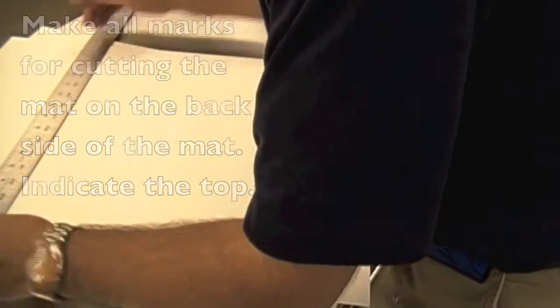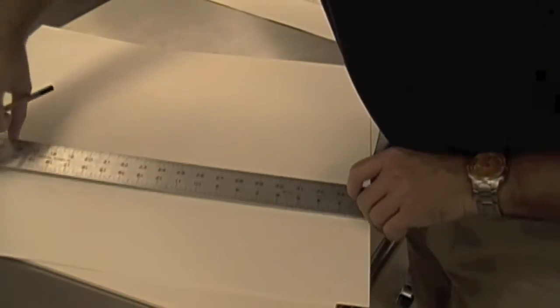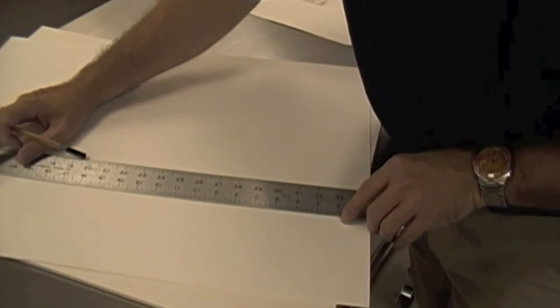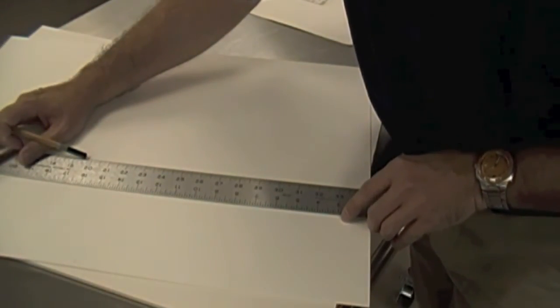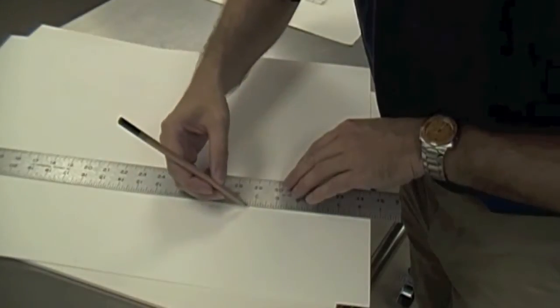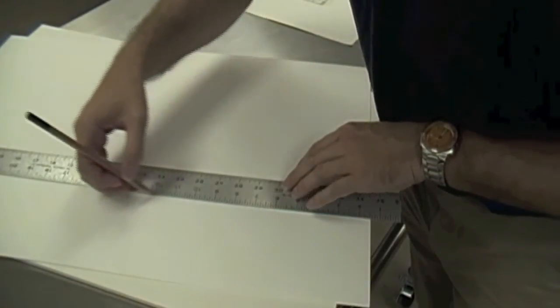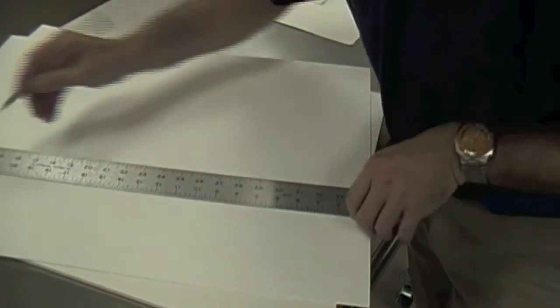And then you want at least two to two and a half inches all the way around. These are probably closer to four or five inches. You do want to draw the lines and go past the ends of the rectangle that you're going to be making because that will be a guide when you're actually cutting it on the mat cutter.